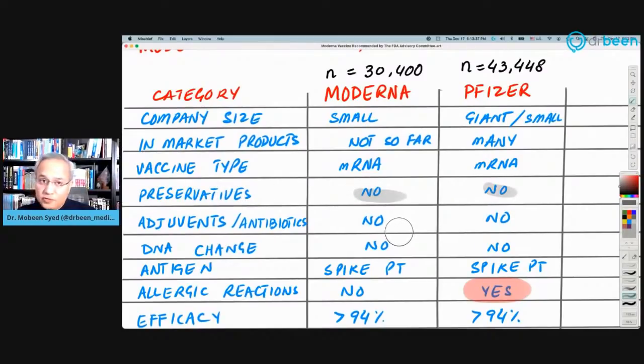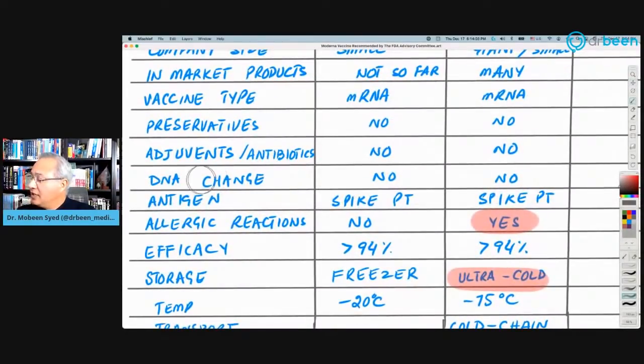Preservatives in the vaccine: Both of them have no preservatives, which is a good thing. Adjuvants that we become very upset about that adjuvants can cause issues, or antibiotics - both have no. I'm not sure about the antibiotics in the Pfizer part. I could not find it, but I think they would not have antibiotics either because their vaccine's lifetime is very short too. Do they change DNA? No on both parts. Which antigen for the virus do they make? They both make spike protein for the virus.